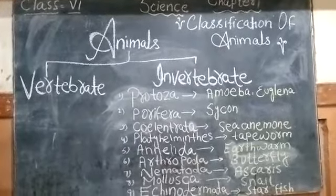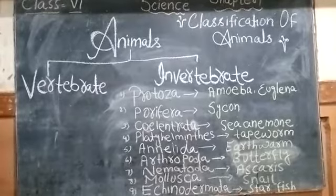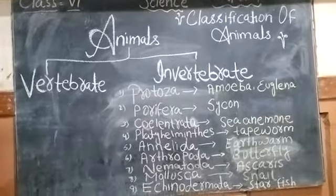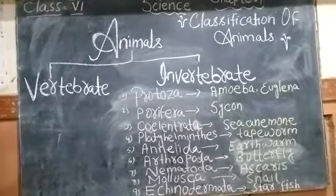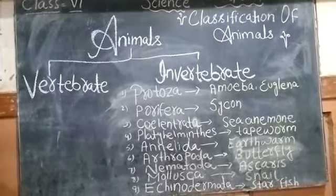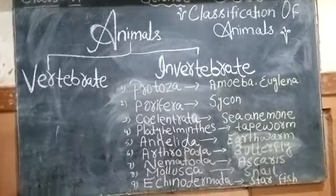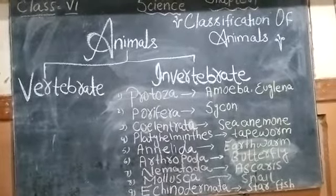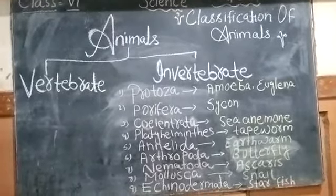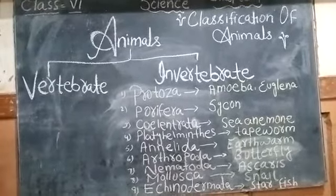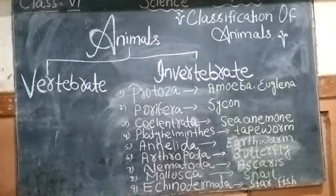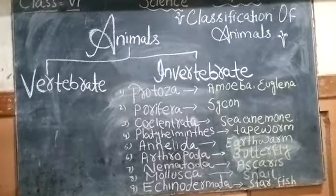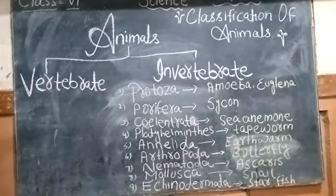What does vertebrate and invertebrate mean? Vertebrate is the type of animal that has a backbone. Invertebrate is the type of animal that does not have a backbone. The invertebrate group is divided into 9 phyla.